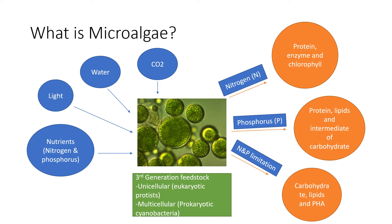Furthermore, nitrogen and phosphorus are major nutrient sources for microalgae growth. Microalgae utilizes nitrogen to produce protein, enzymes, and chlorophyll. Phosphorus is consumed by microalgae to produce protein, lipids, and intermediates of carbohydrates. However, during the limitations of nitrogen and phosphorus, carbohydrates, lipids, and polyhydroxyalkanoates, also known as PHA, are accumulated.